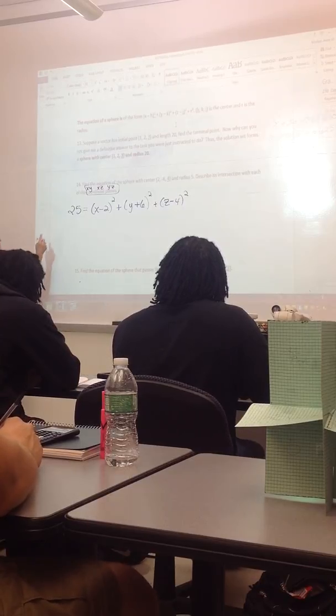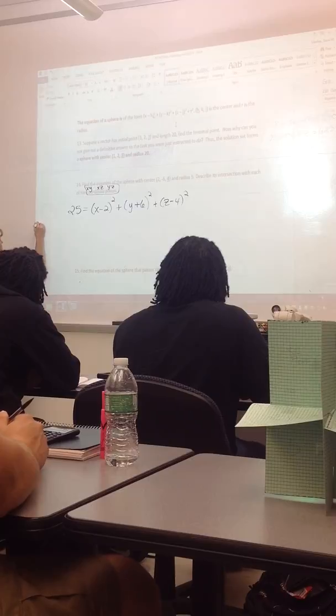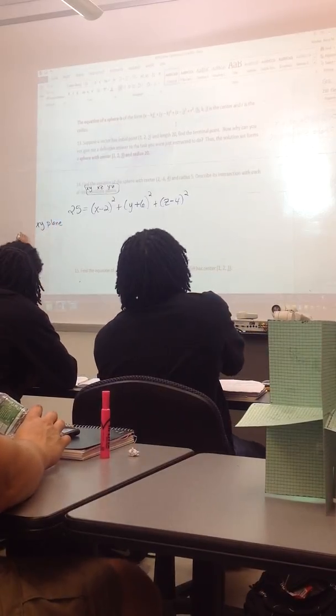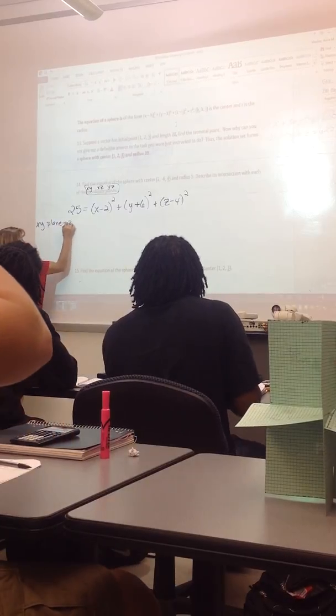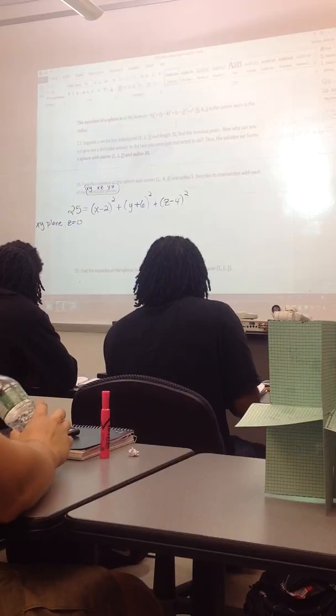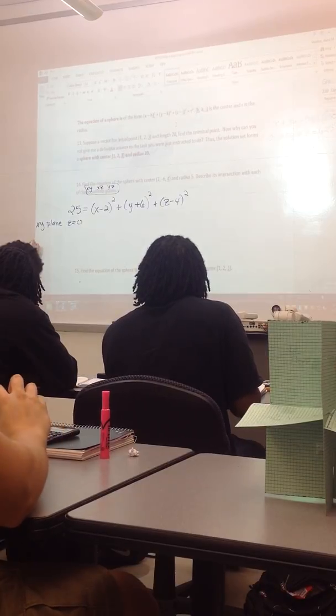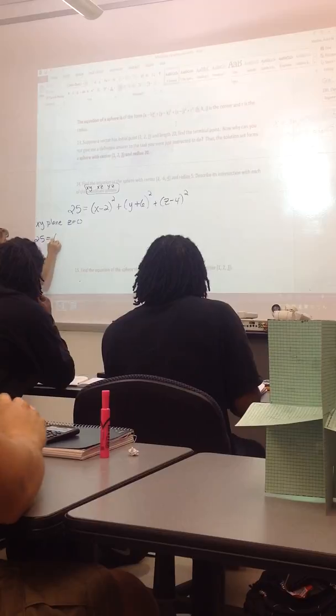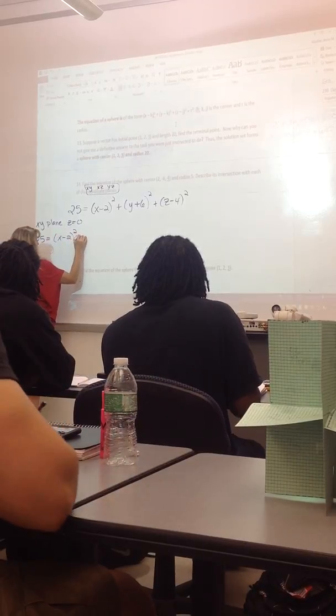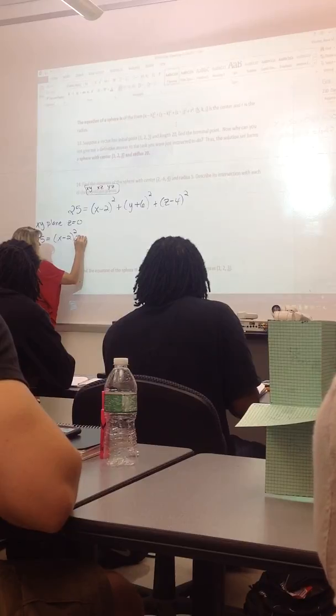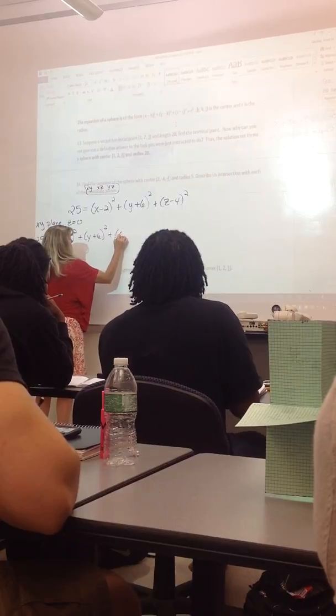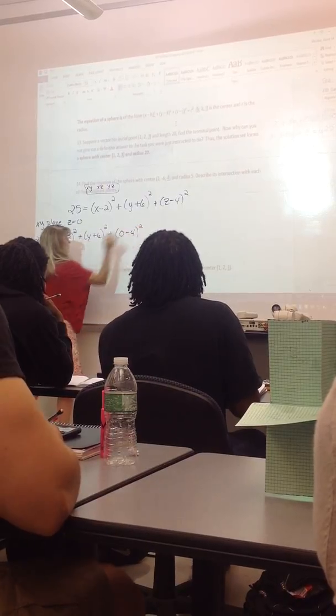So if I intersect the xy plane, then z has to be 0. I'm not on the xy plane if z is not 0. So 25 would have to equal x minus 2 squared plus y plus 6 squared plus 0 minus 4 squared.